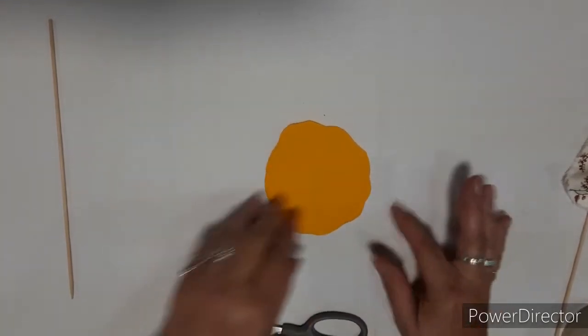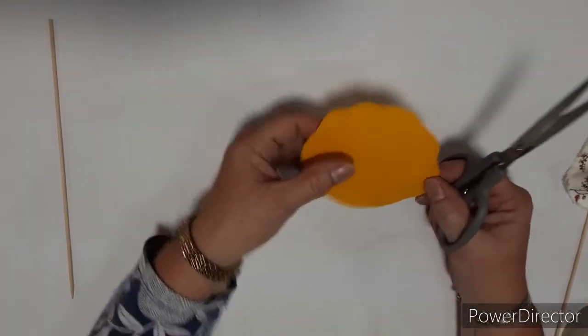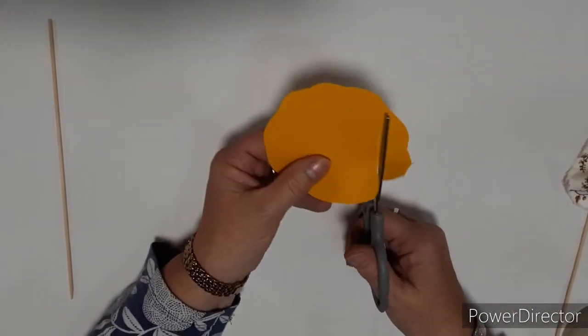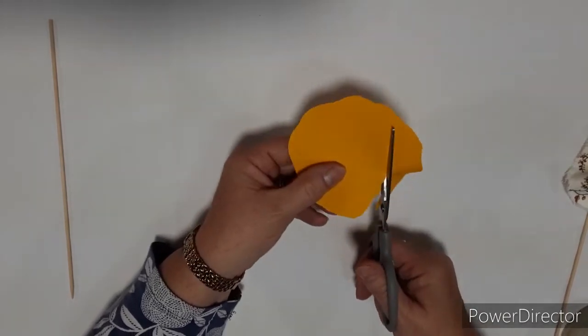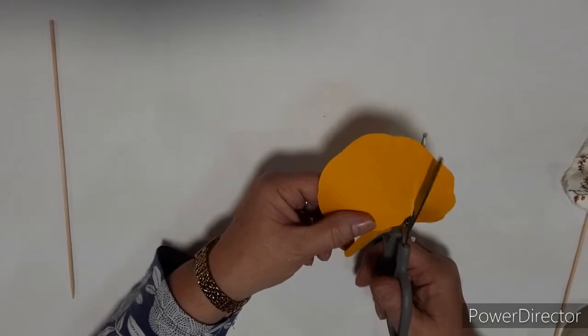Next thing we're going to do is we're going to make a spiral now. So snipping in from the edge, cut the spiral out, making your way round to the center of the shape.